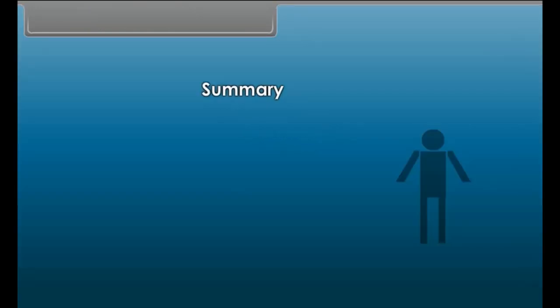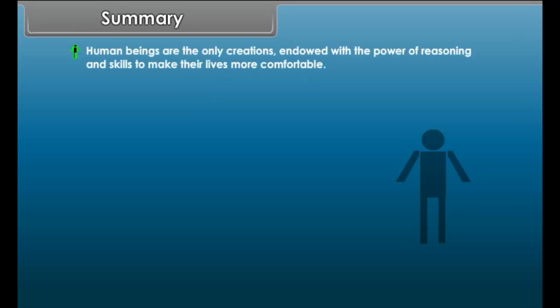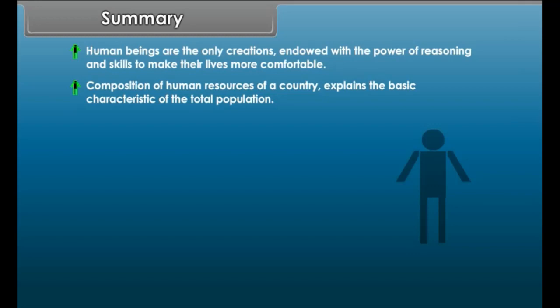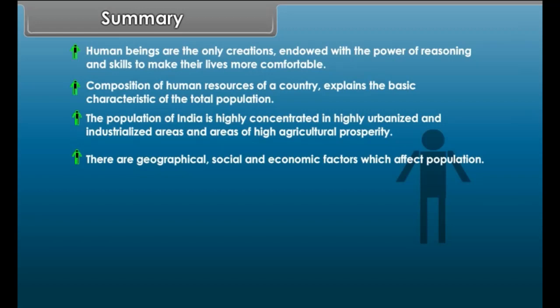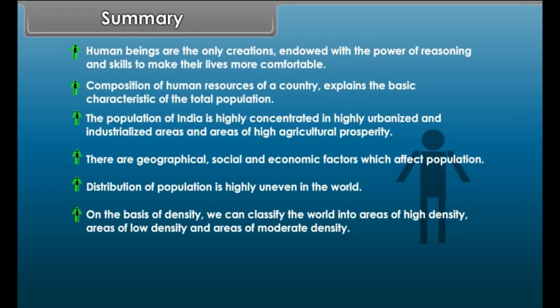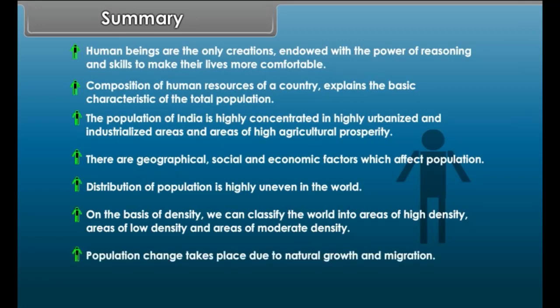Summary: Human beings are the only creations endowed with the power of reasoning and skills to make their lives more comfortable. The composition of human resources explains the basic characteristics of the total population. The population of India is highly concentrated in urbanized, industrialized, and agriculturally prosperous areas. Geographical, social and economic factors affect population distribution. Population distribution is highly uneven in the world, and on the basis of density, the world can be classified into areas of high, moderate, and low density. Population change takes place due to natural growth and migration.